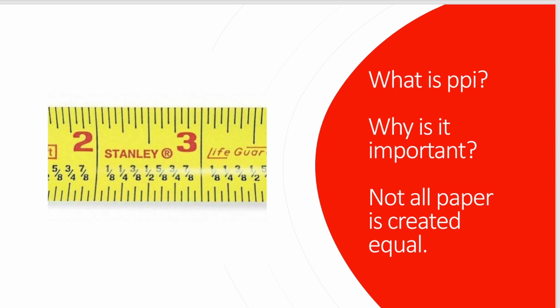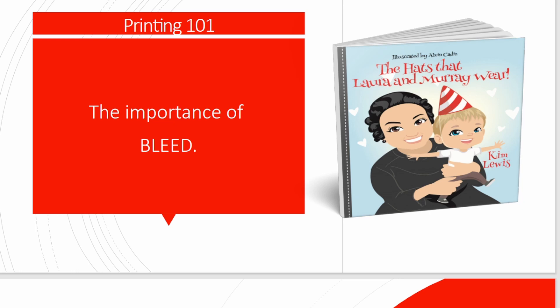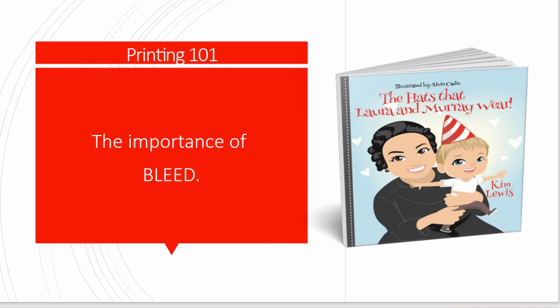Bleed is the image that comes to the edge and past the edge of a trim. When you submit a file to a printer, if you don't have enough bleed, printing tolerances of a 32nd to an eighth of an inch can cause a white line on the edge of your book. Bleed means taking the image past the trim line — a minimum of an eighth of an inch, with many printers preferring a quarter inch, just to be safe.